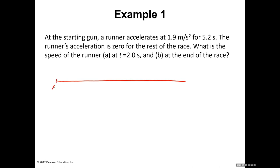Let's say this is the race going from point A to the end. We have two parts because it starts from rest at position A, then accelerates at 1.9 meters per second squared for 5.2 seconds, and after that its acceleration is zero. That means we have three points of interest: point A to point B, and then from point B to point C.